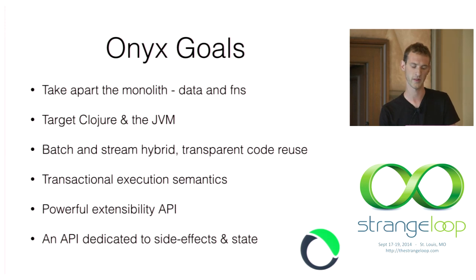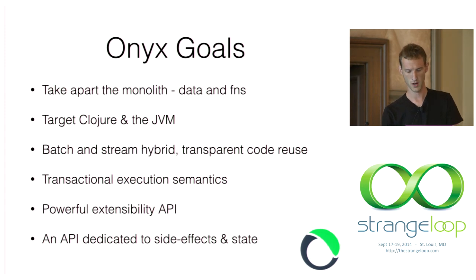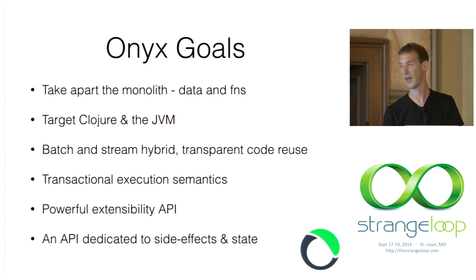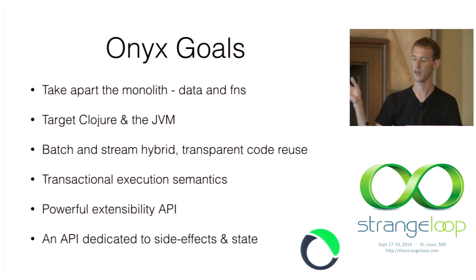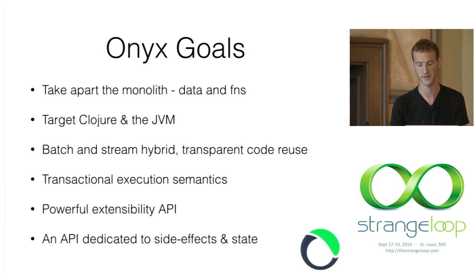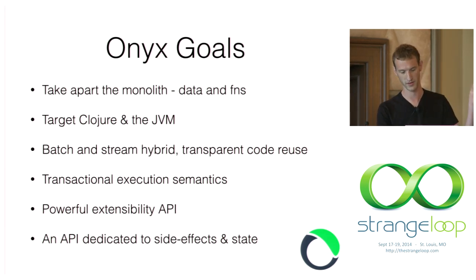Onyx is both a batch and streaming hybrid and supports transparent code reuse between these two things. We see that people really like this with things like Apache Spark and Summingbird. While it's really hard to actually do this well, it's totally worth it because it gives you a whole different set of designs to defend against human fault tolerance, similar to the lambda architecture.